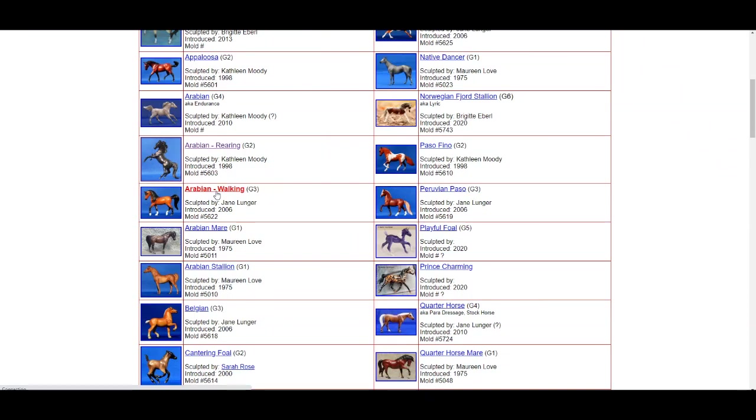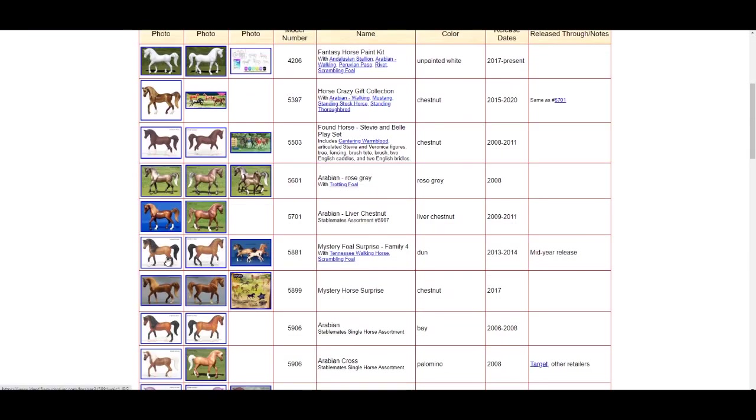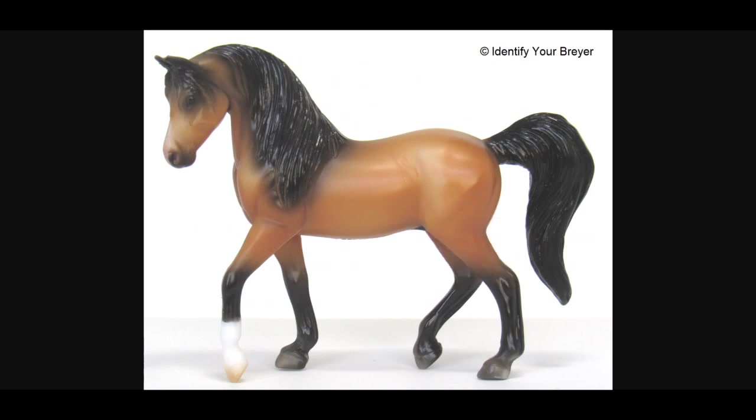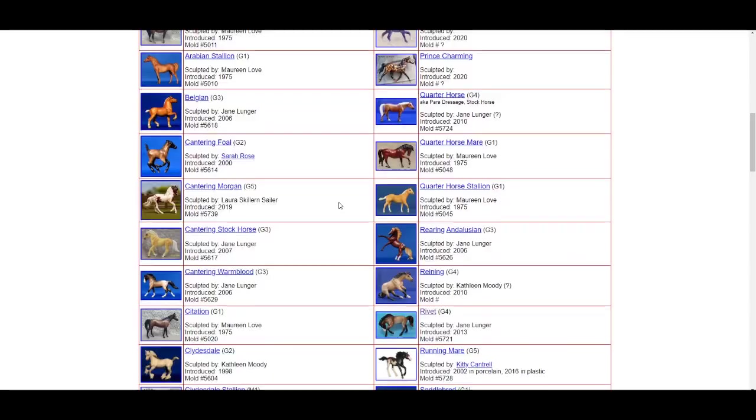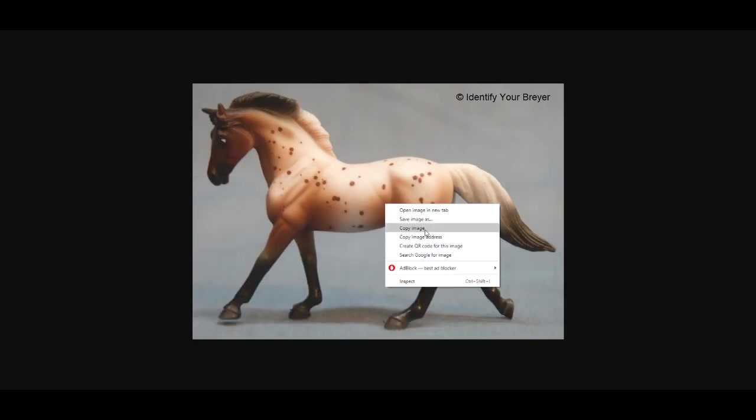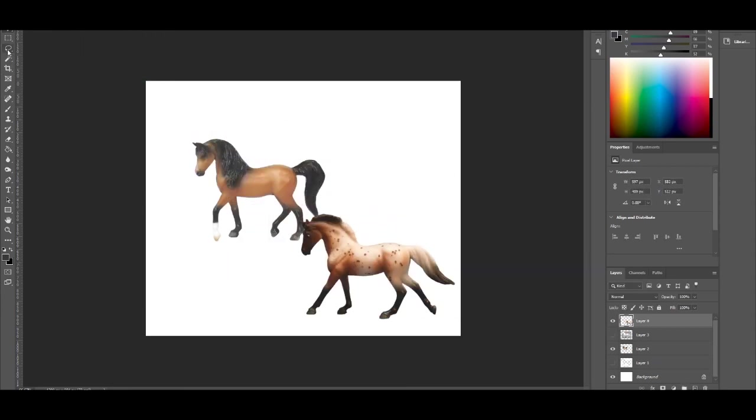Another method is taking images from online of the stablemate sculptures that you want to customize. I like using the website identifyyourbreyer.com. That's because they have the full archives of all of the Breyers that exist. Inputting them into a program like Photoshop, cropping them out and digitally manipulating the photographs to become your switcheroos.